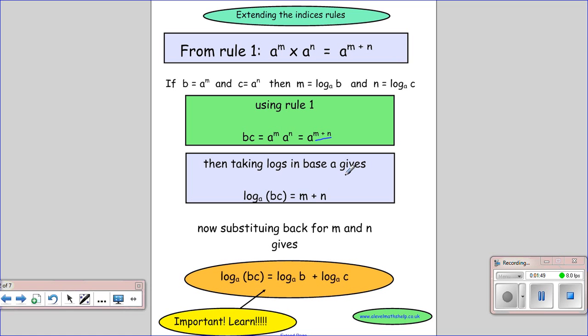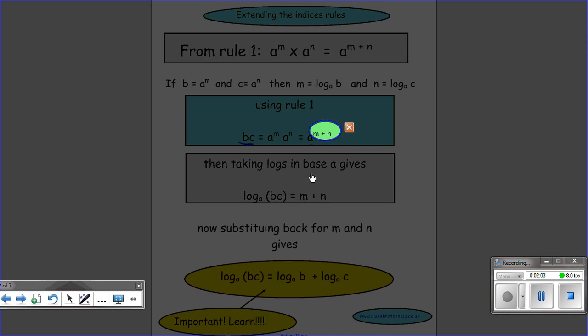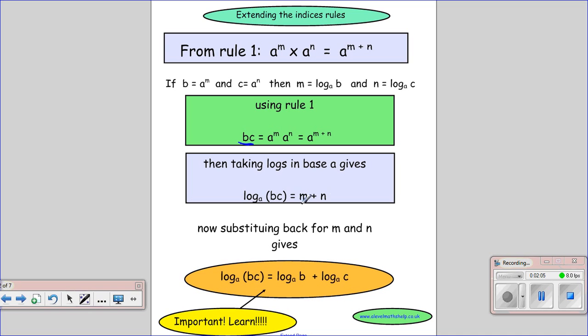Now, rewriting this again in the log format, we say log in base a, because there's our base, to get the answer of b times c is this power here. So we would have to raise a to the m plus n to give us b times c.